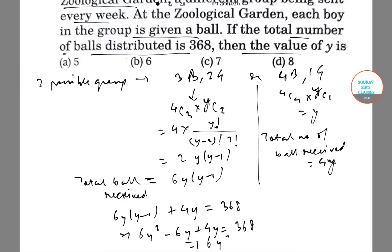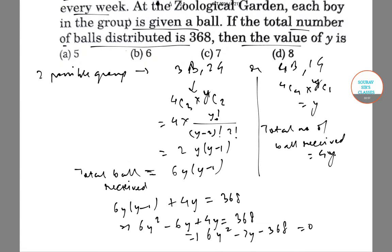Or 6y squared minus 2y minus 368 equals 0. From here we get 3y squared minus y minus 184 equals 0.